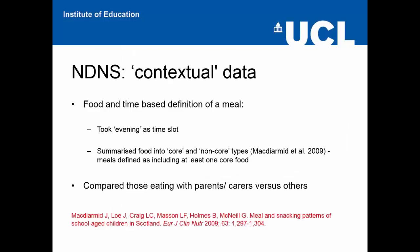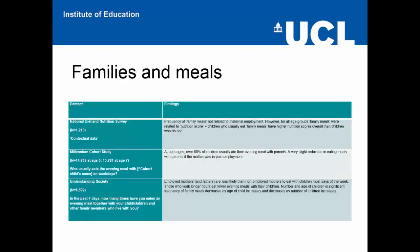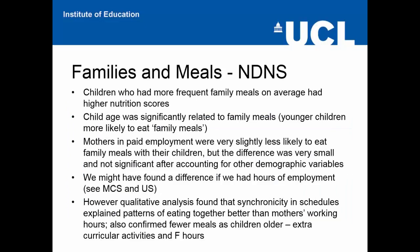It was quite complicated to define both a family and a meal. We were pragmatic — we adopted a food and time-based definition of a meal, taking the evening as the time slot and summarising food into core and non-core types. Meals were defined as including at least one core food, and we compared those eating with parents or carers versus those eating with others. We found that children who had more frequent family meals had higher nutrition scores on average. Child age was significantly related to family meals, with younger children more likely to eat family meals than older ones. We didn't find a relationship between maternal employment and frequency of family meals, but if we'd had hours of employment data we might have done.